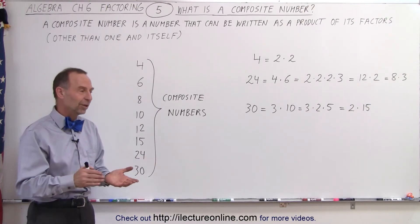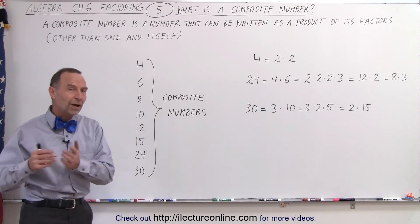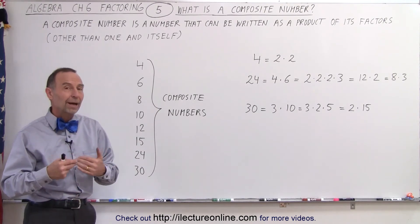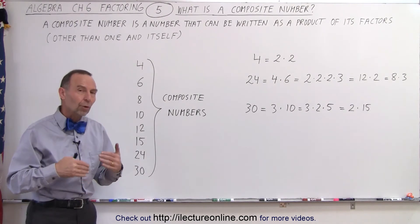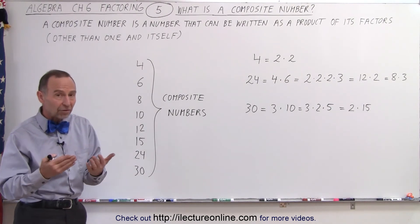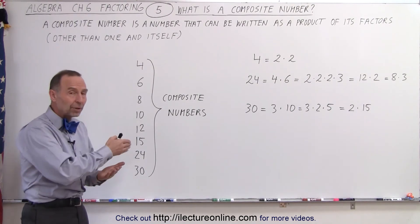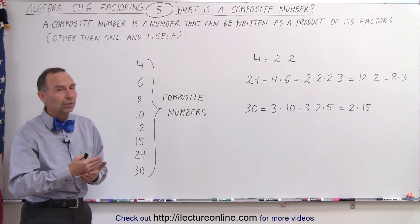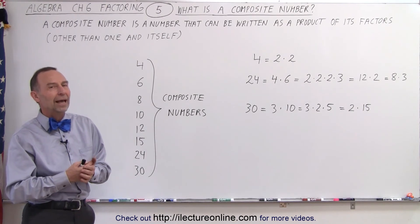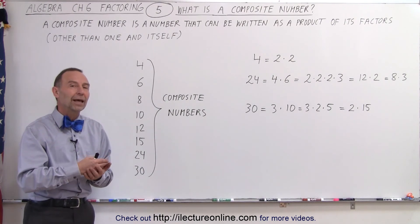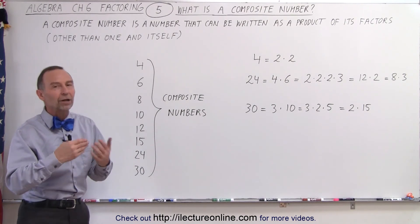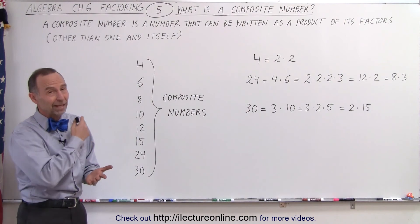And so that's the difference. Either it's a prime number or it's a composite number. Again, we're talking about integers that are positive, that are greater than zero. So any integer that is positive is either a prime number or a composite number. A prime number can only be written as a product of one and itself. A composite number can be written as a product of factors that are other than one and itself. And that's the difference.